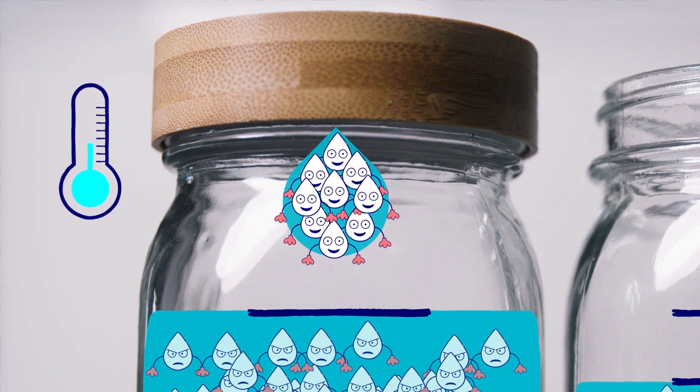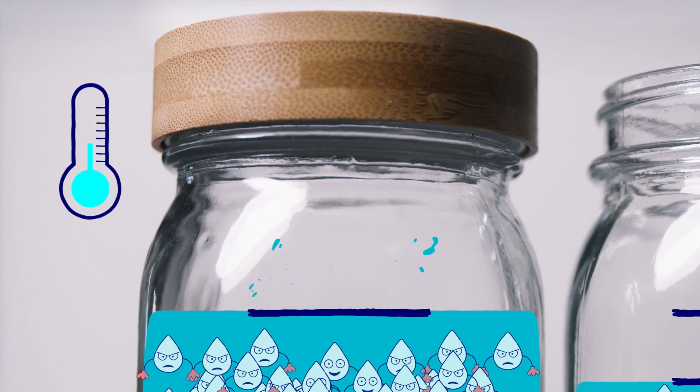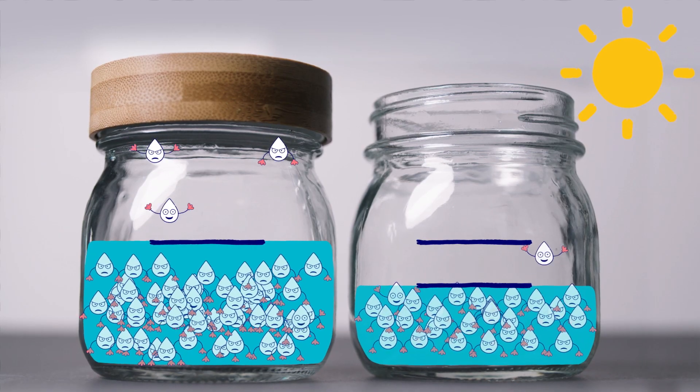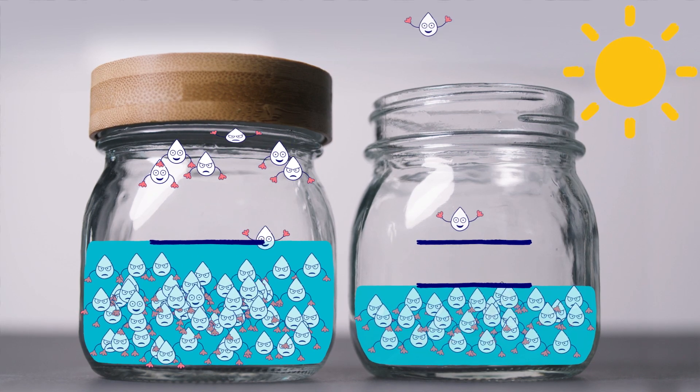When they form heavier drops, they fall back into the water. This is called precipitation or rain. Water is recycled round and round, never leaving the jar.